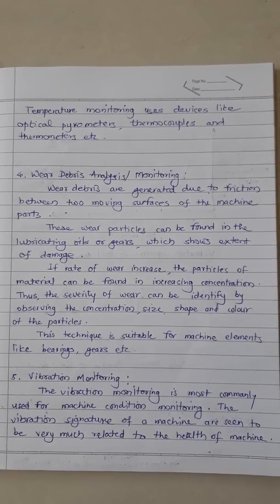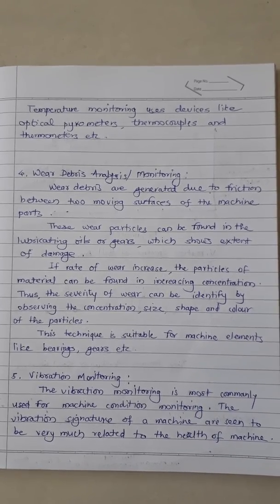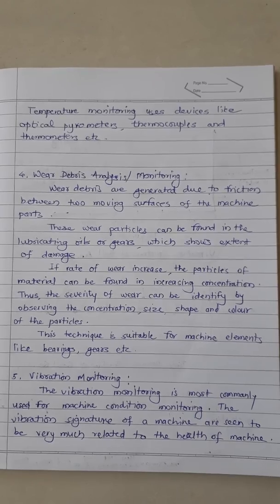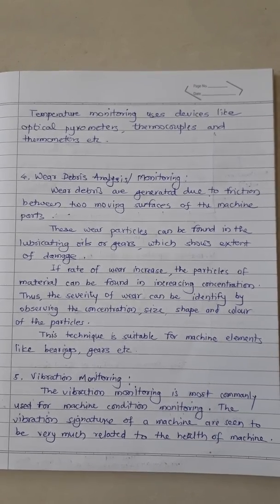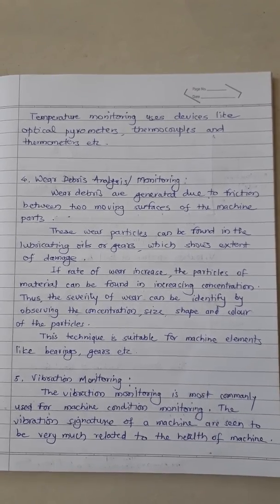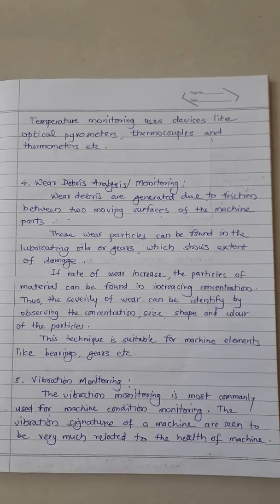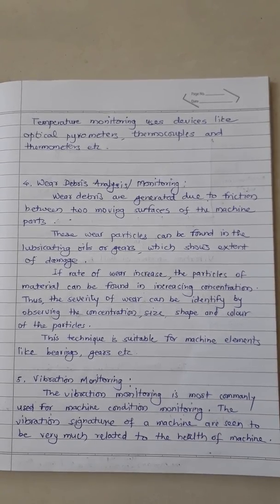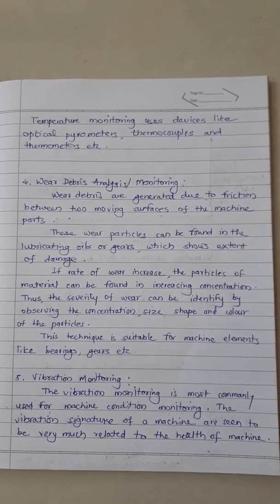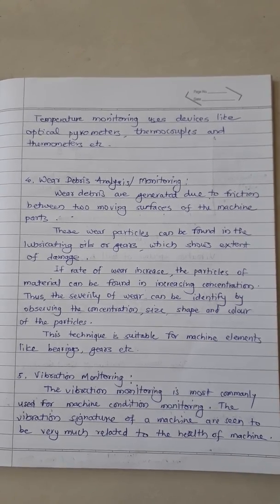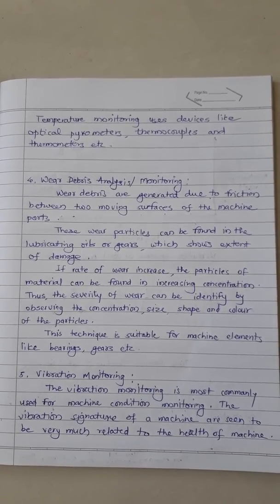Wear debris analysis or monitoring: wear particles are generated due to friction between two moving surfaces of machine parts. These wear particles can be found in the lubricating oils or greases, which shows the extent of damage. If the rate of wear increases, the particles of material can be found in increasing concentration. Thus the severity of wear can be identified by observing the concentration, size, shape, and color of the particles.